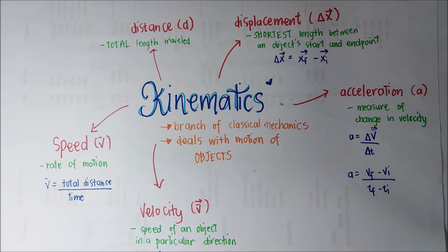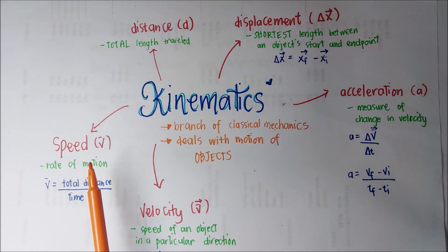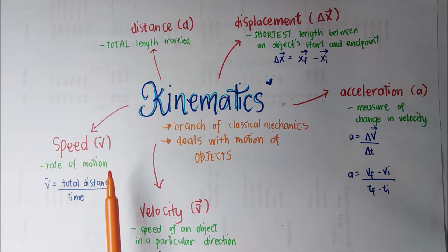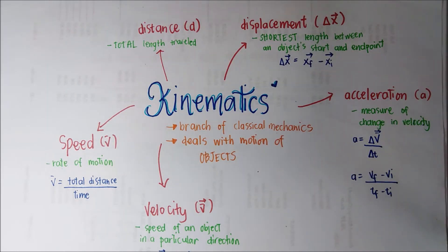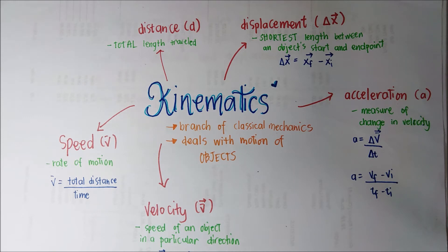We will be having sample problems after this introduction about the terms. Next, we have speed, which is the rate of motion, usually computed by getting the total distance over time. The formula for velocity is net displacement over time interval. For acceleration, this is the measure of change in velocity. Acceleration is equal to delta v, your change in velocity, divided by delta time.